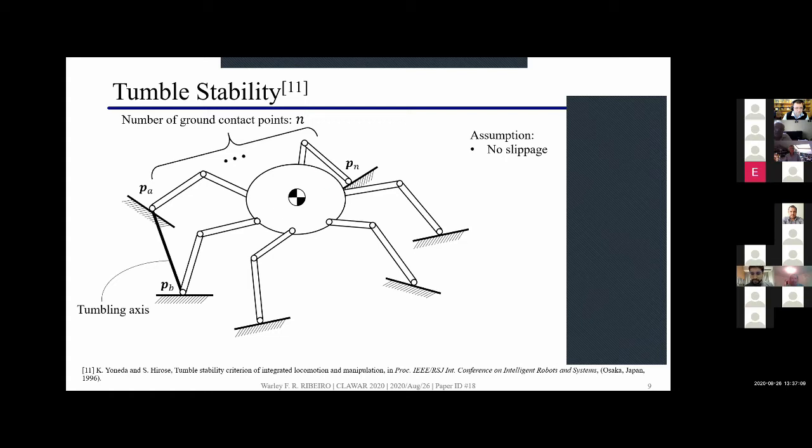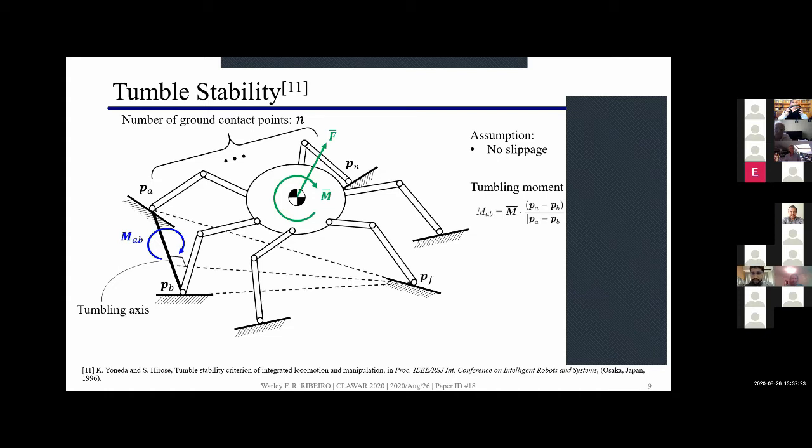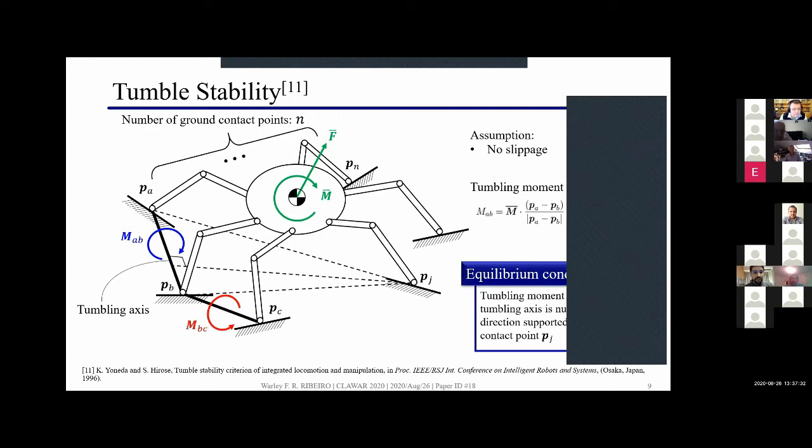We can define a tumbling axis between any two contact points and from the total force and moment acting on the robot which includes the gravity, inertial effects, external disturbances, we can compute the tumbling moment Mab around the tumbling axis. If there's another point that prevents the tumbling motion in the direction of the tumbling moment the robot is in equilibrium. However if there's no point such as the case in the moment Mbc the robot is tumbling.